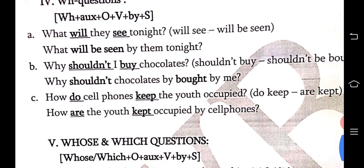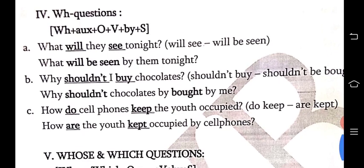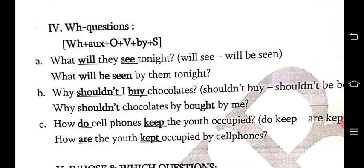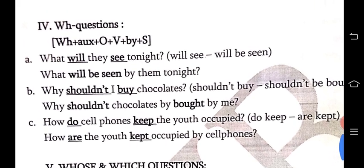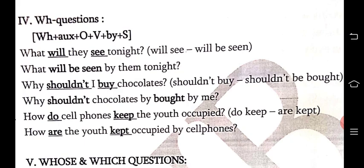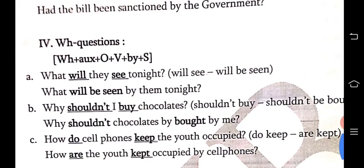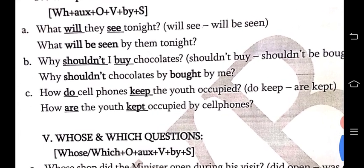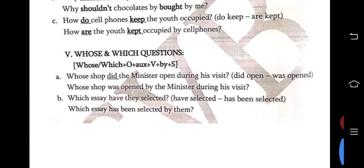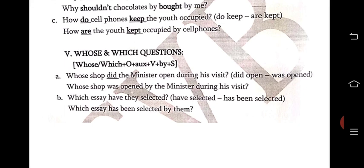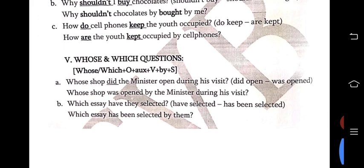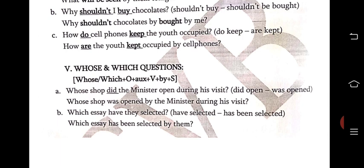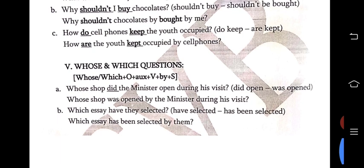For other WH questions, the formula is: WH word + auxiliary + object + verb + by + subject. Examples: 'What will they see tonight?' — 'will see' → 'will be seen' → 'What will be seen by them tonight?' 'Why shouldn't I buy chocolates?' — 'shouldn't buy' → 'shouldn't be bought' → 'Why shouldn't chocolates be bought by me?' 'How do cell phones keep the youth occupied?' → 'How are the youth kept occupied by cell phones?' For whose/which questions: 'Whose shop did the minister open?' → 'Whose shop was opened by the minister during his visit?' 'Which essay have they selected?' → 'Which essay has been selected by them?'